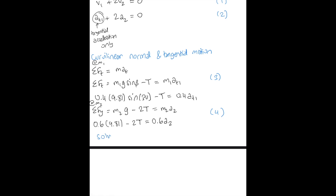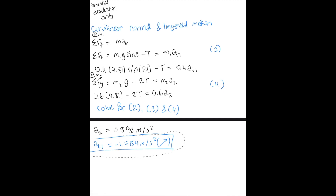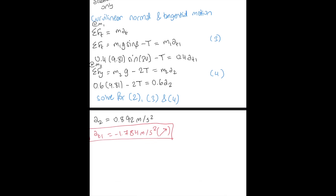Solving equations 2, 3, and 4 simultaneously, we get A2 = 0.892 m/s². We also get the value for the tangential acceleration, which is −1.784 m/s² — the negative sign indicates direction. We also find our tension in the cable, which is equal to 2.68 N.